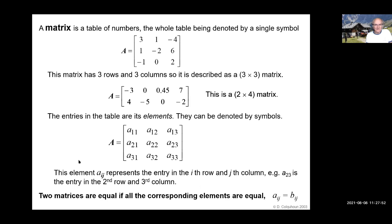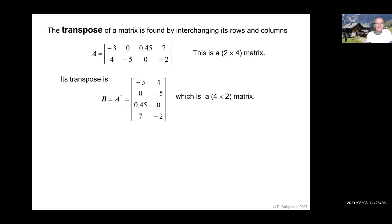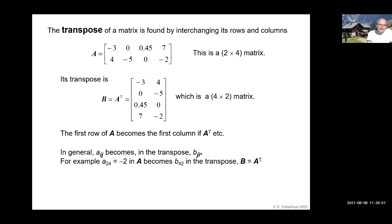Two matrices are deemed to be equal if all the corresponding elements are equal. The transpose of a matrix is found by interchanging its rows and columns. A is a two by four matrix, and its transpose — indicated by this superscript T, which is not a power, just a label — is a four by two matrix. The first row of this becomes the first column of that, and the second row of this becomes the second column of that. In general, Aᵢⱼ becomes Bⱼᵢ in the transpose.